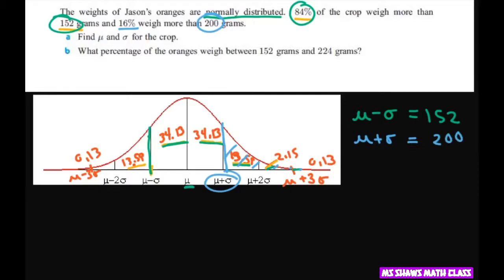So we have a system of equations. And if we add this up, you get 2μ equals 352. So our μ is going to be, if you divide both sides by 2, that gives you 176.